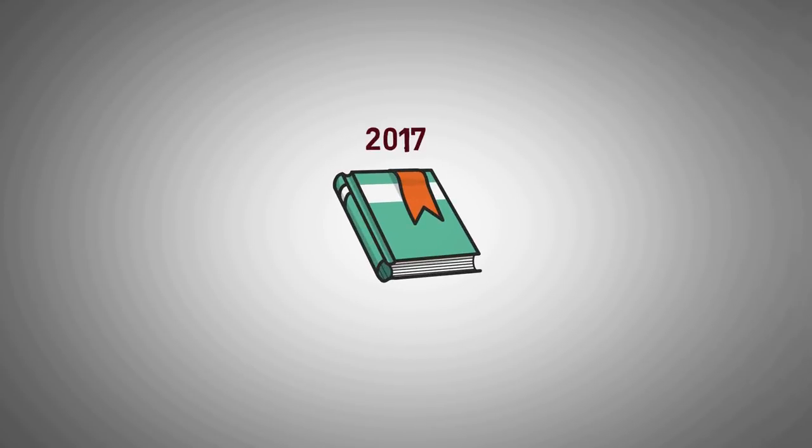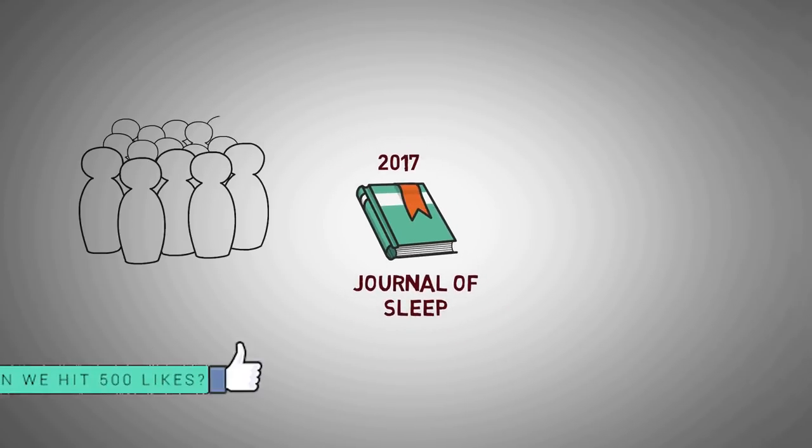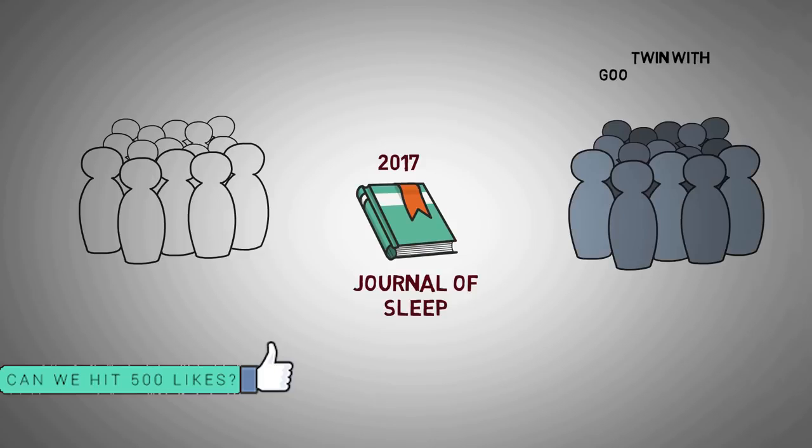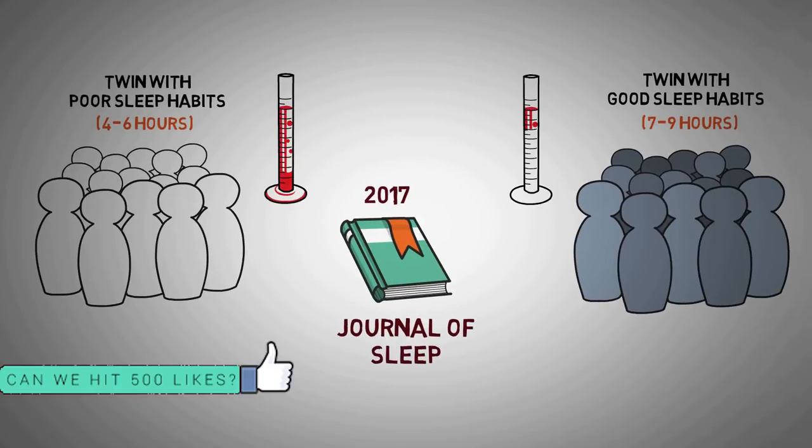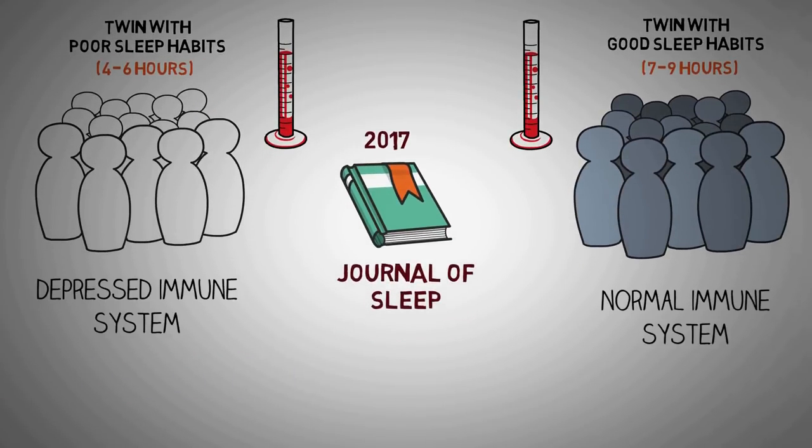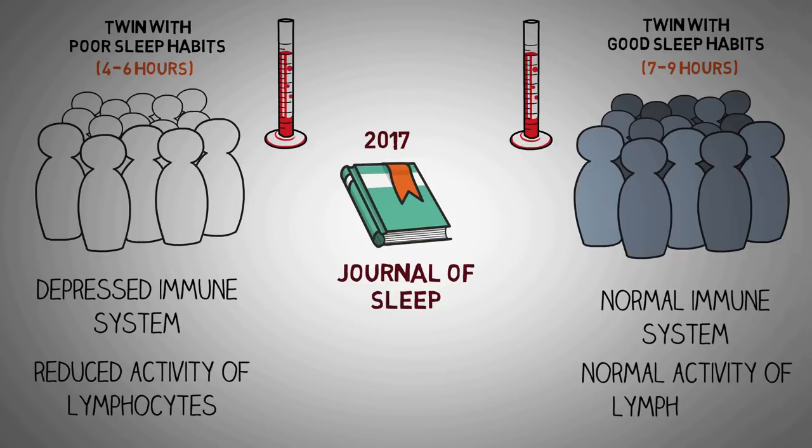In a 2017 study published in Journal of Sleep, researchers took blood samples from 11 pairs of identical twins with different sleep patterns and found that the twin with a shorter sleep duration had a depressed immune system with reduced activity of lymphocytes in their blood compared with his or her sibling.